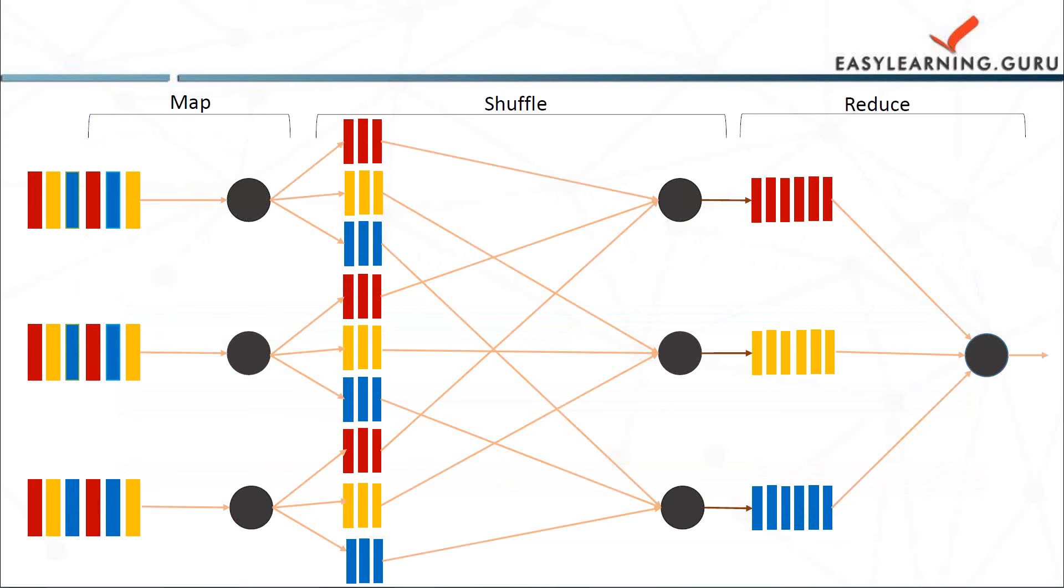Then the reduce step. So the worker nodes or the data nodes now process each group of output data per key in parallel.